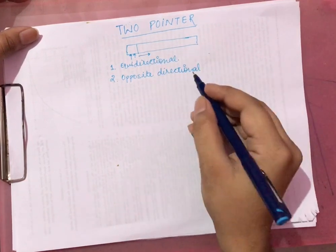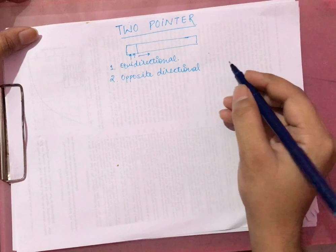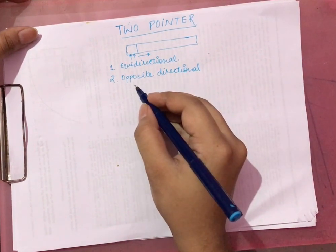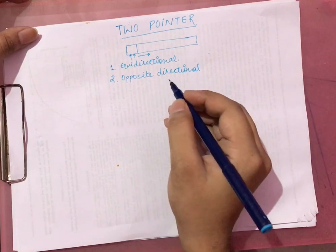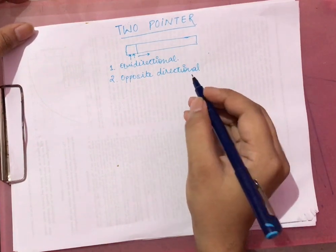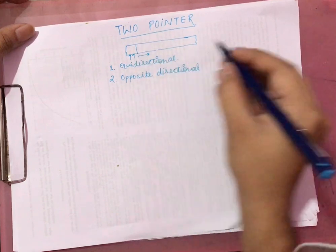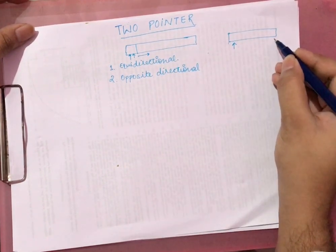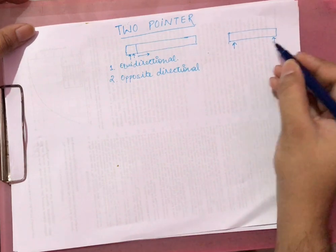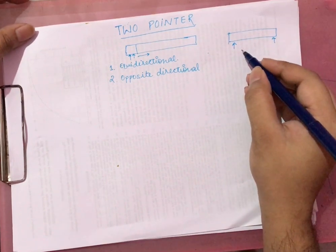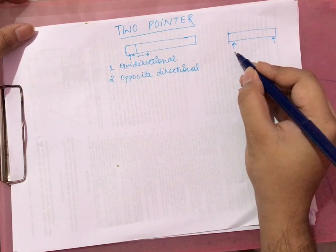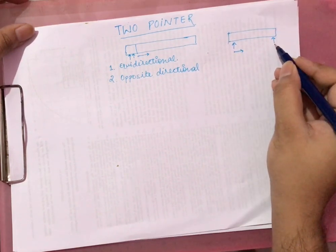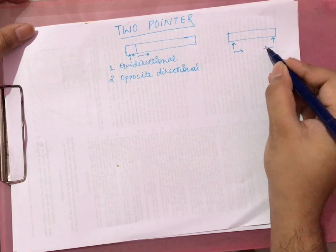In the opposite directional two pointer approach, we put one pointer at the start of the array and another pointer at the end of the array. The start pointer moves in the forward direction while the end pointer moves in the reverse direction.